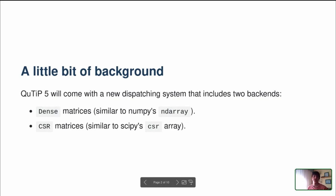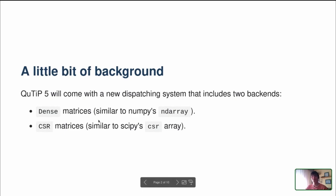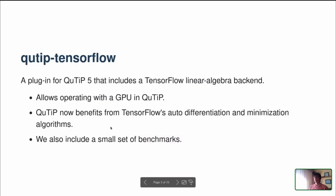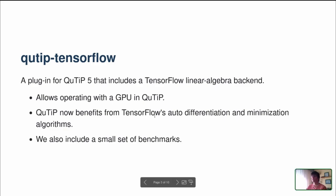Another example is the QPy backend. Qt TensorFlow is yet another backend for Qtip 5 that includes TensorFlow's linear algebra routines. This means that with Qt TensorFlow you can operate with a GPU. Quite interestingly, you are also able to benefit from some of TensorFlow's functions, such as autodifferentiation and some optimization algorithms that are already implemented in TensorFlow.